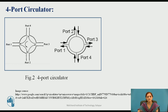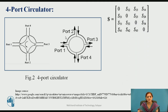Now consider the 4-port circulator with ports 1, 2, 3, and 4. If the input is applied to port 1, the output comes from port 2. If the input is applied to port 2, the output comes from port 3. In that case, port 4 and port 1 are isolated from each other. In this 4-port circulator, the scattering matrix is defined with all its parameters.